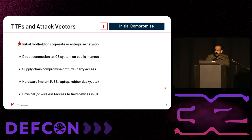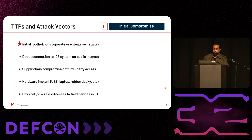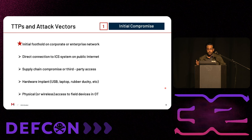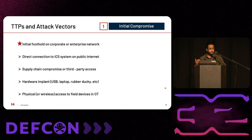The first phase is initial compromise. The objective is to gain an initial foothold in the target environment. In most real-world scenarios, this typically translates to using a social engineering or spear phishing campaign to compromise the enterprise side of the organization. In fact, the majority of red team exercises for OT that we perform begin with some form of attempt to gain access on the corporate network. The initial compromise phase could also entail more direct attack vectors, such as direct connection to ICS on the internet, supply chain compromise, third-party compromise, hardware implants, and physical or wireless access to OT systems in the field.